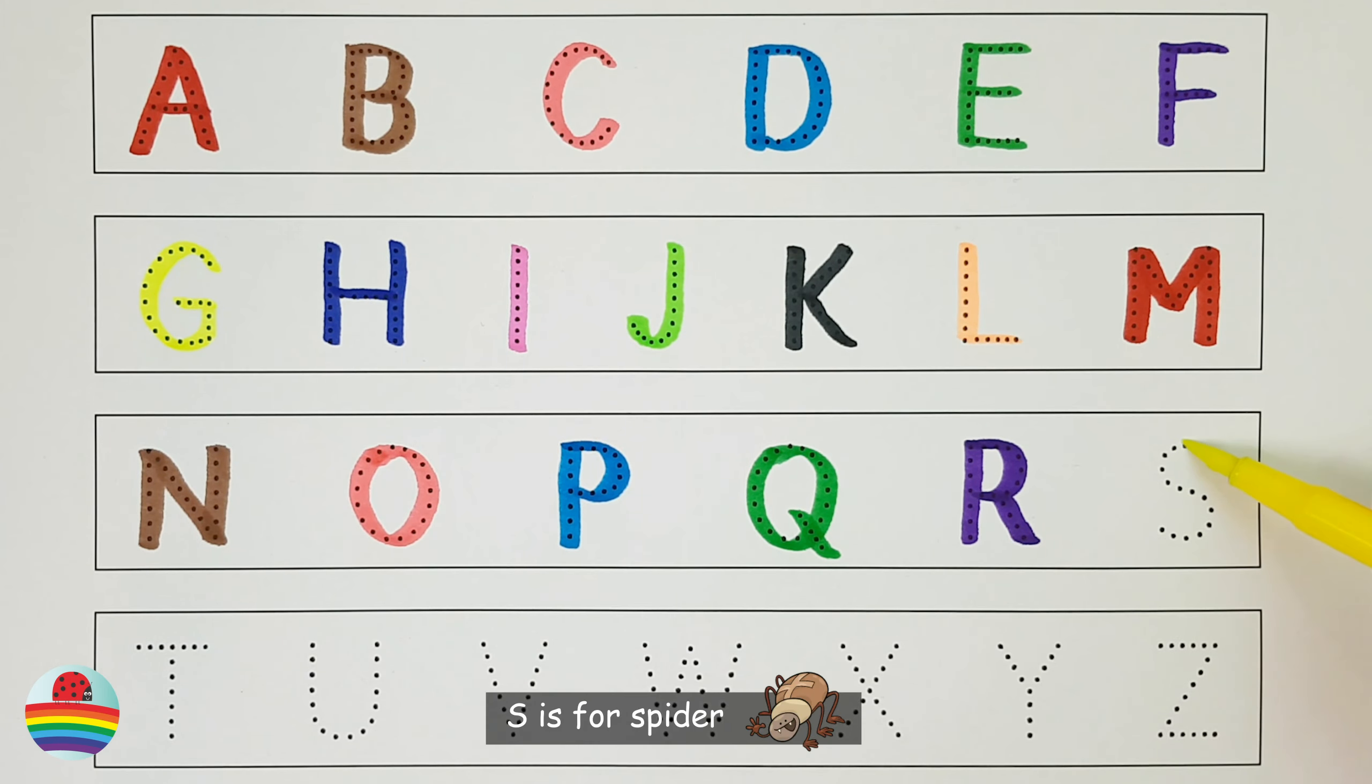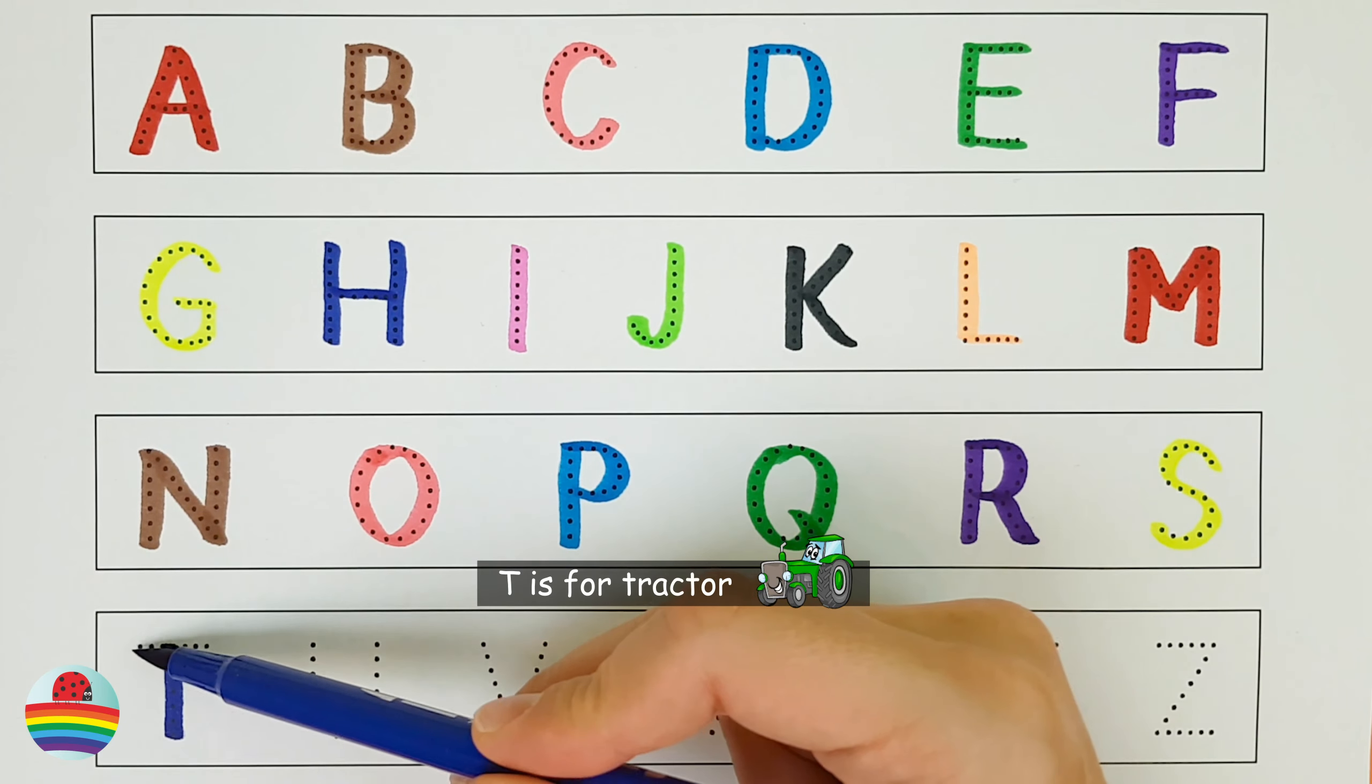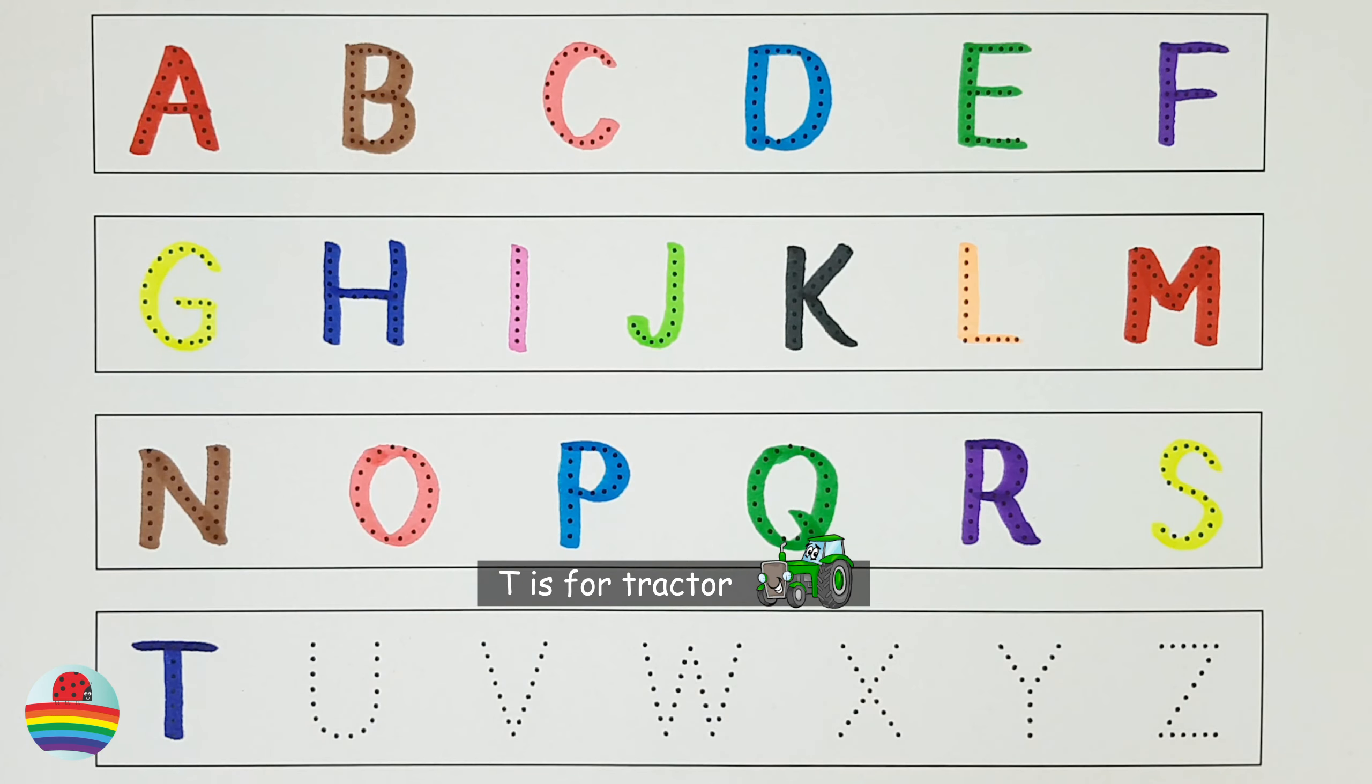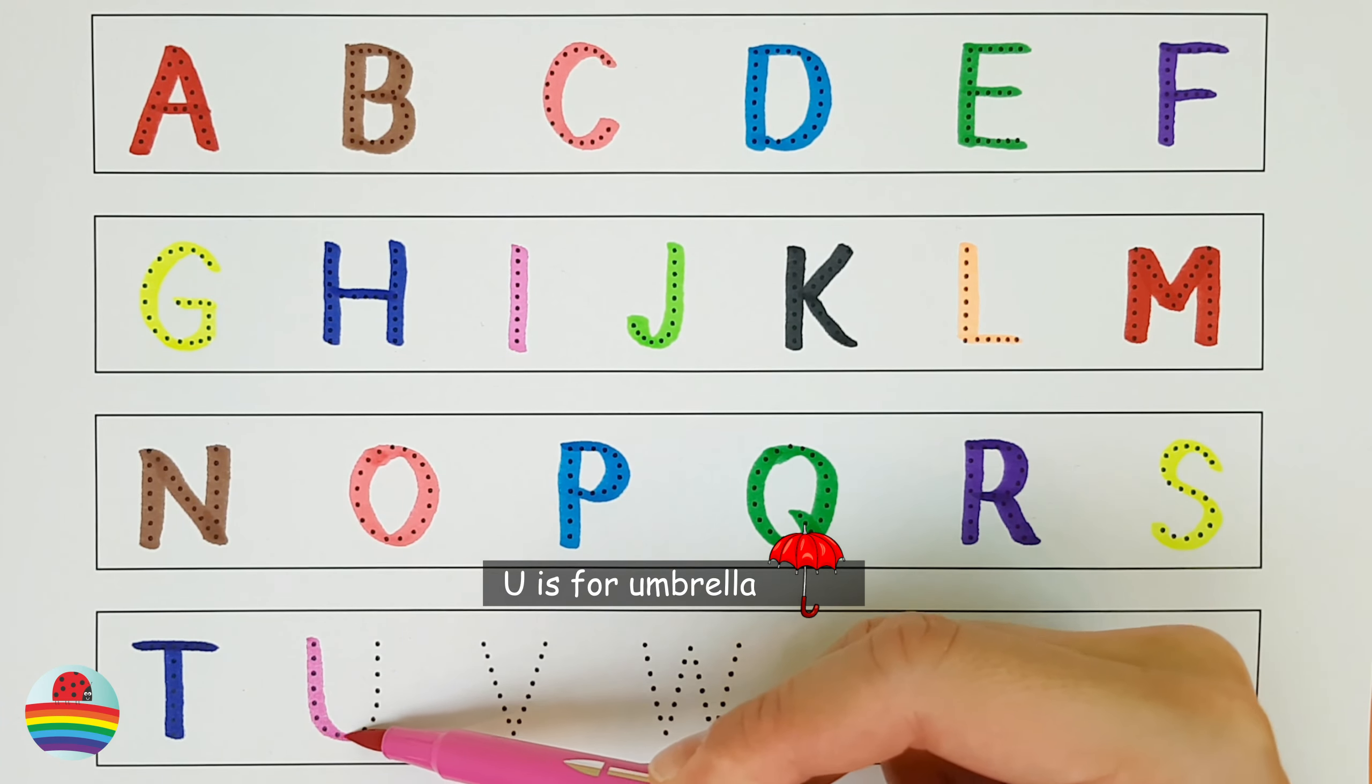S is for Spider, S. T is for Tractor, T. U is for Umbrella, U.